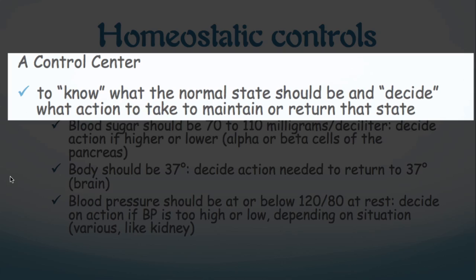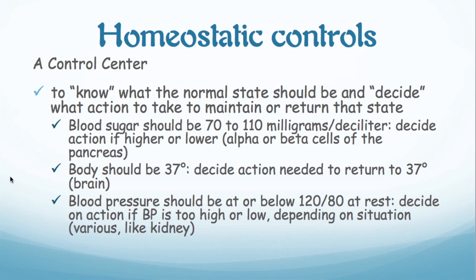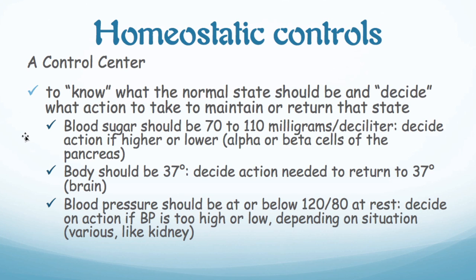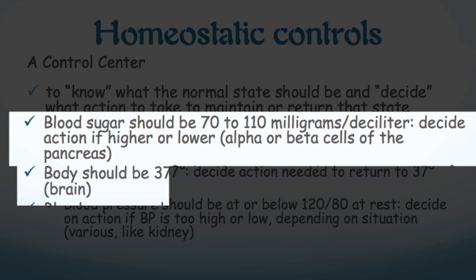The receptor is something that knows what's going on and can pass the message on to the control center. The control center is the part of the system that knows where we should be — what is just right — and so it gets information from the receptor telling it what the state is, and if it's not where we should be, it decides what action to take so that we can get back to that state; it's working all the time just to maintain that state. For example, if blood sugar should change too much, alpha or beta cells of the pancreas will act as a control center.